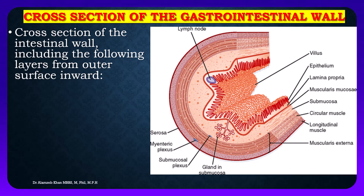Storage and elimination refers to the temporary storage and subsequent elimination of indigestible food molecules. Now we will discuss the cross-section of the gastrointestinal wall. The cross-section of the intestinal wall includes the following layers, from the outer surface inward.